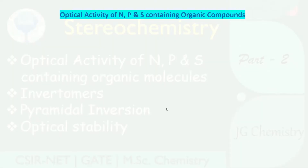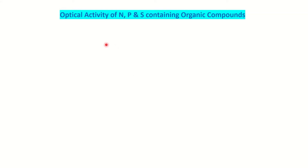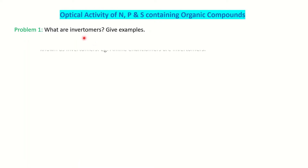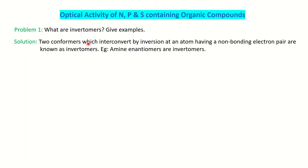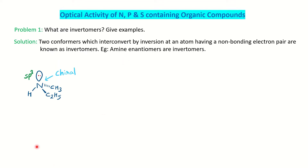Let's start. First we will see the optical activity with respect to nitrogen, and you will frequently encounter the question: what are invertomers? Give examples. Invertomers are found when you have a nitrogen-containing heteroatom in organic molecules. When two conformers interconvert by inversion and have a non-bonding electron pair, they are called invertomers. Amine enantiomers are called invertomers.